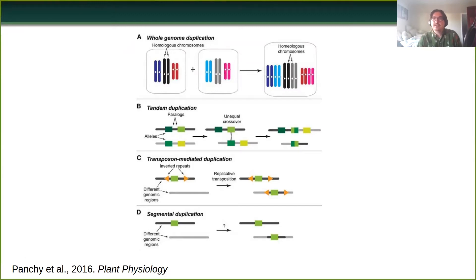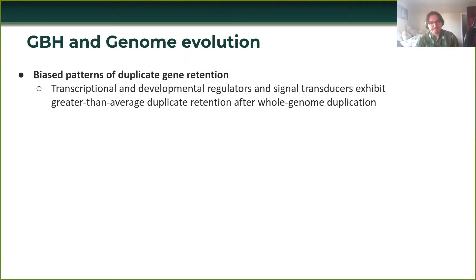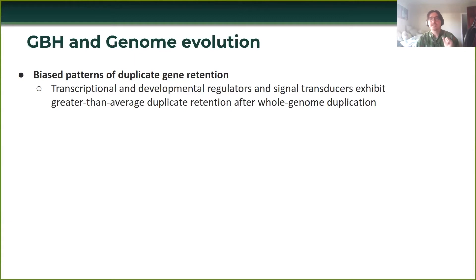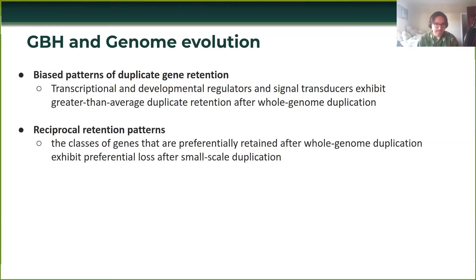These different processes of gene duplication can lead to different levels of genomic balance, and this has been observed and studied across angiosperm genomes. A consistent finding, most strongly identified in Arabidopsis, is that there are biased patterns of duplicate gene retention depending on the mode of duplication and the function of genes. Transcriptional developmental regulators and signal transducers have greater than average duplicate retention after whole genome duplication, which follows from the gene balance hypothesis. On the flip side, there's reciprocal retention — genes preferentially retained after whole genome duplication are more often lost after small-scale duplications like tandems or segmentals.